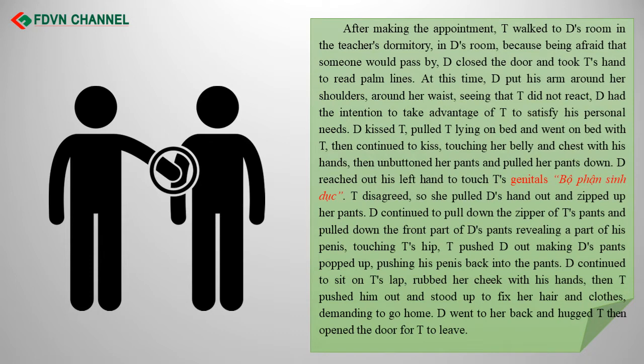After making the appointment, T walked to D's room in the teacher's dormitory. Because he was afraid someone would pass by, D closed the door and took T's hand to read palm lines. D then put his arm around her shoulders and waist. Seeing that T did not react, D formed the intention to take advantage of T to satisfy his personal needs. D kissed T, pulled T lying on the bed, then continued to kiss her, touching her belly and chest with his hands, then unbuttoned her pants and pulled them down.